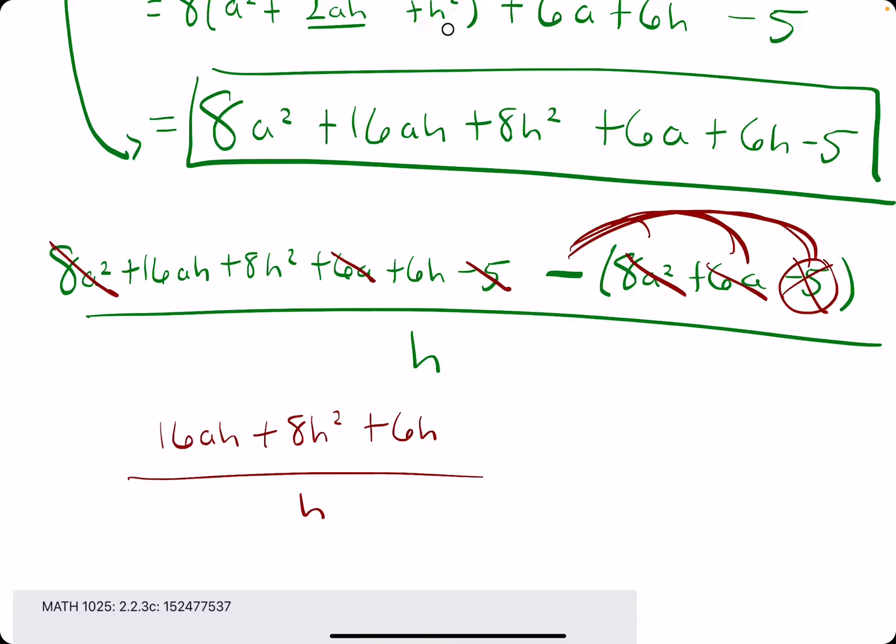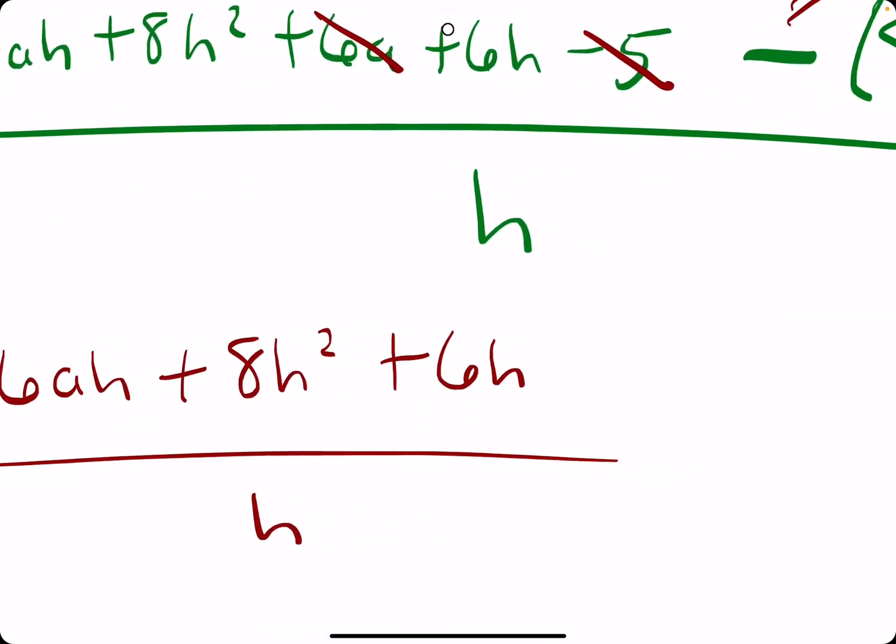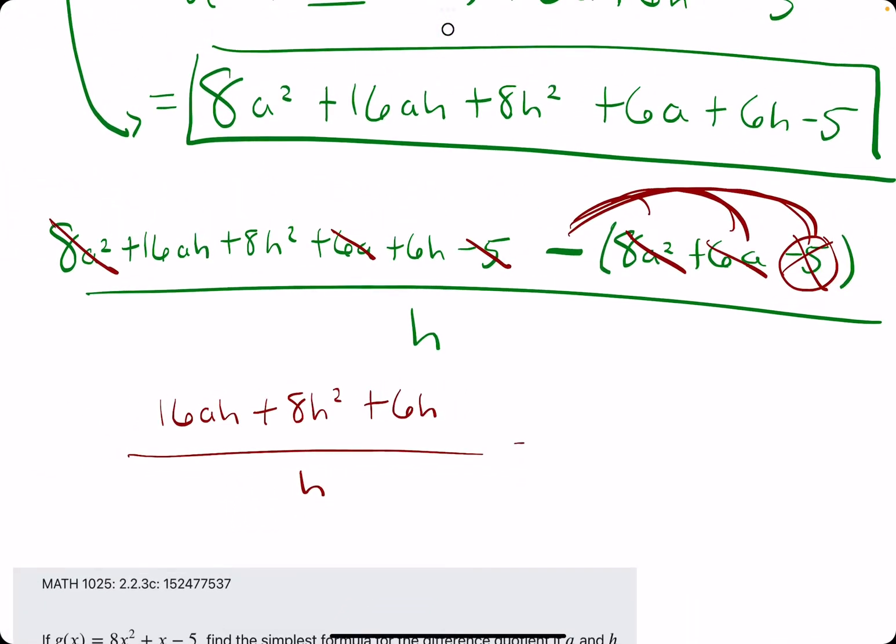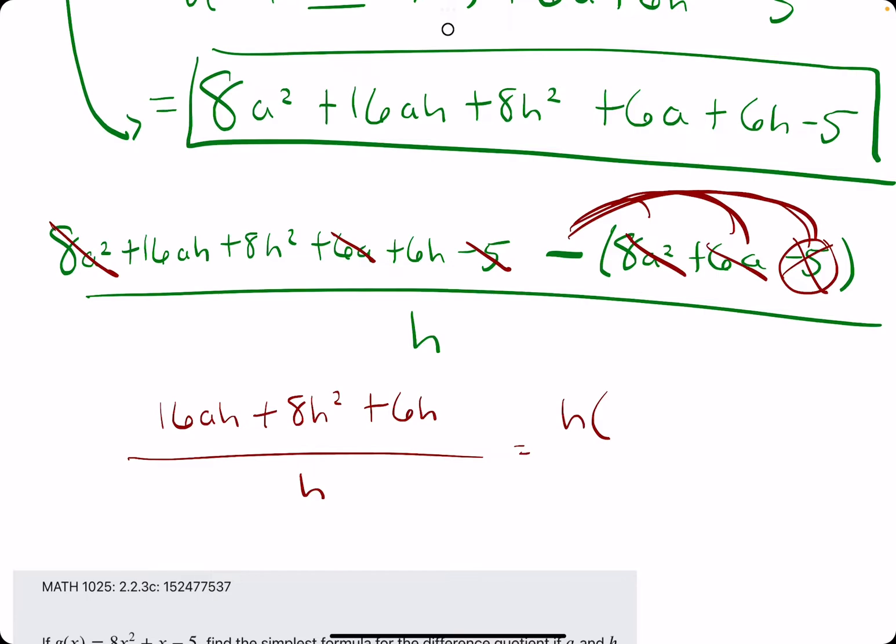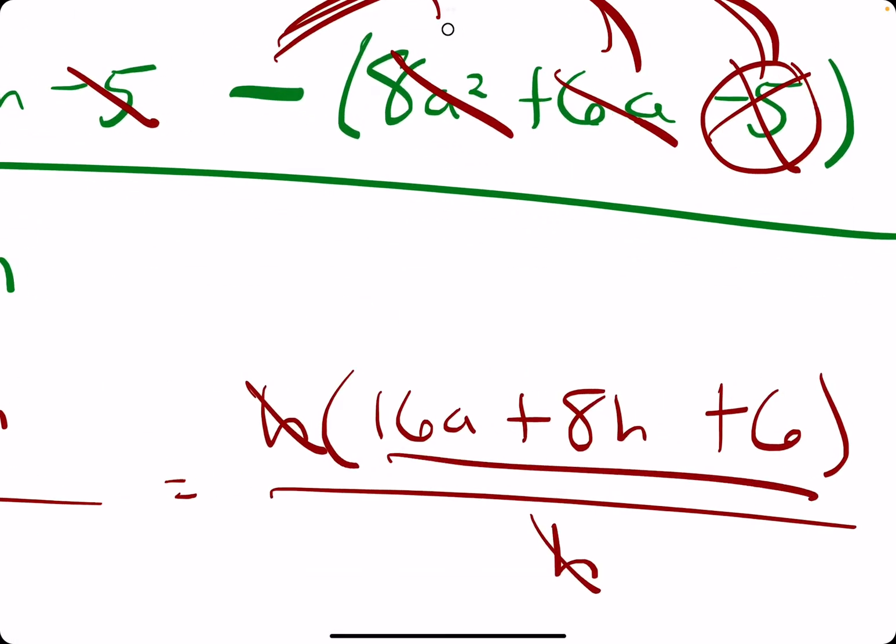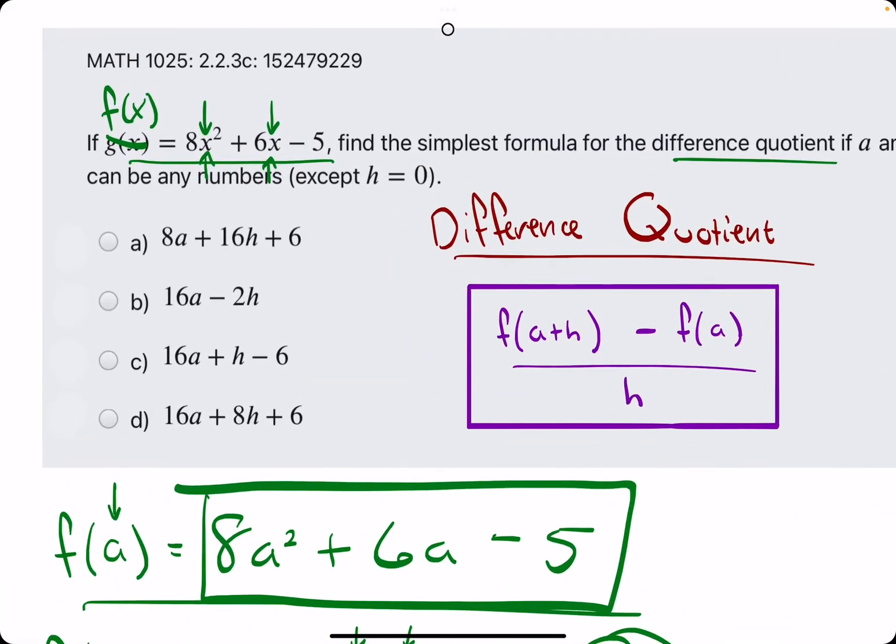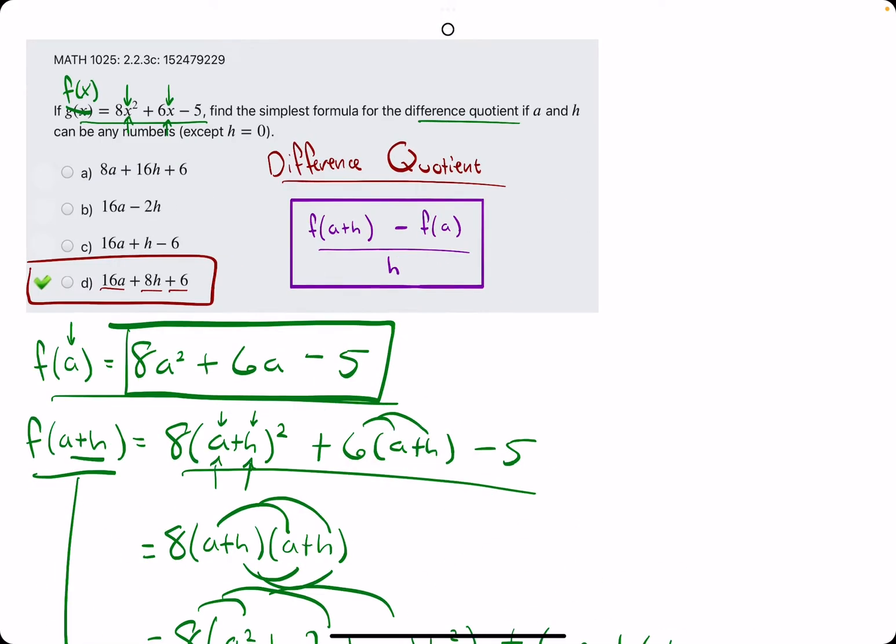On top, we have 16ah plus 8h² plus 6h all divided by h. So, what we could do now is divide out an h from each of these top terms and then eliminate the h from the bottom. Or you could see it as factoring out one h from the top. So, if we factor out an h from all the numerator terms, we're left with 16a plus 8h plus 6. And again, that's all divided by h still. So, we just cancel out these h's and this is what we're left with. So, 16a plus 8h plus 6. Break out the eraser to see that d is our answer.